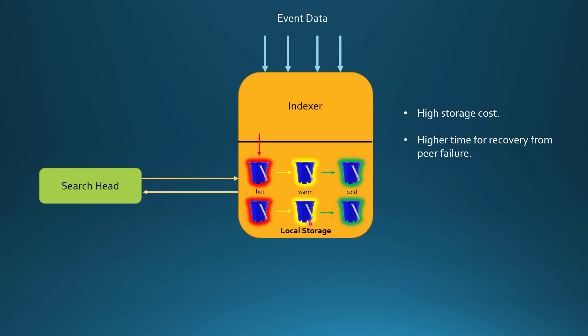The second challenge: let's say in our indexer cluster one of the peers goes down. When we are bringing that peer back up, it needs to sync all the data, and if we have a very large volume of data it will take time — meaning a very high recovery time when we have peer failure. The same thing also impacts data rebalancing and bucket fixing. So there are certain challenges a project may face when moving from small to medium to large deployment.